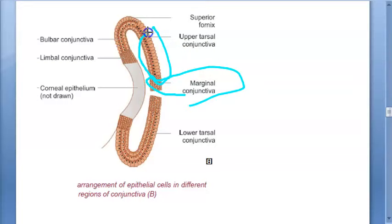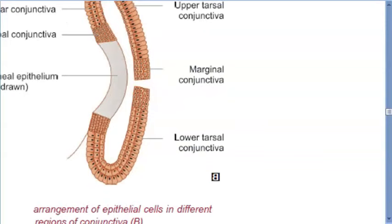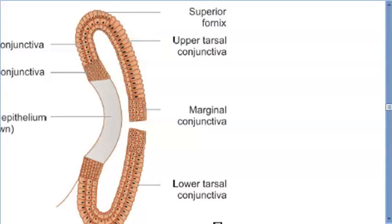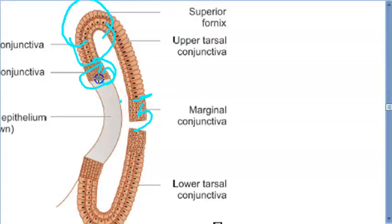The number of epithelial layers varies by region: marginal conjunctiva has five-layered stratified squamous epithelium; tarsal conjunctiva has only two layers — a superficial cylindrical layer and a deep flat layer; fornix and bulbar conjunctiva have three-layered epithelium; and limbal conjunctiva has five to six layers, the highest.